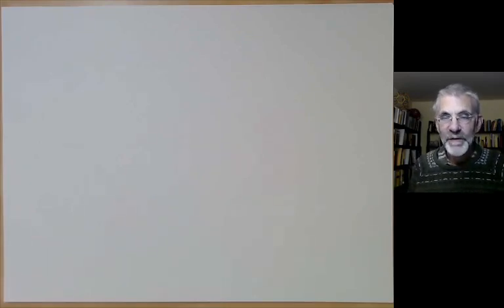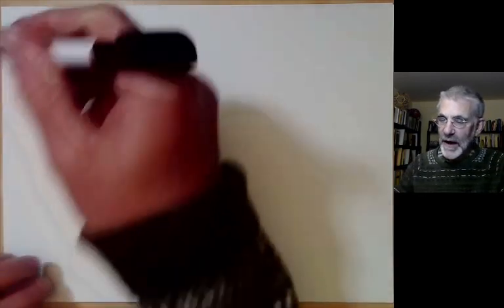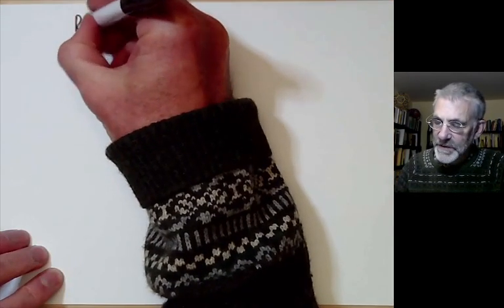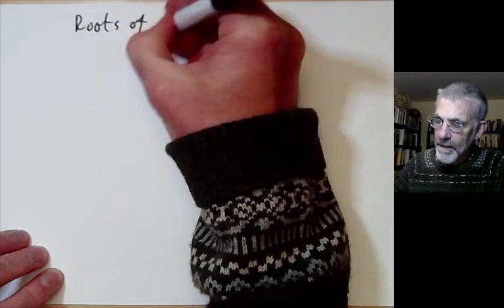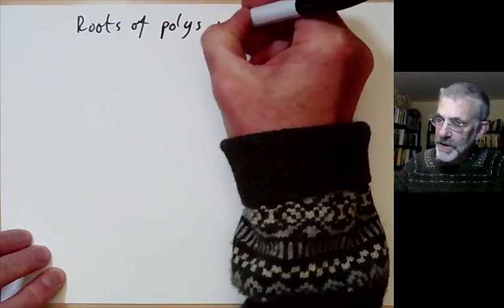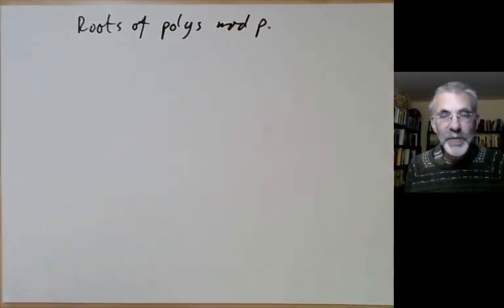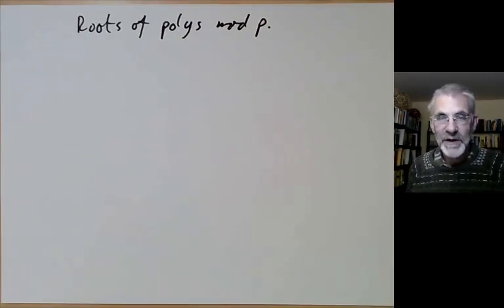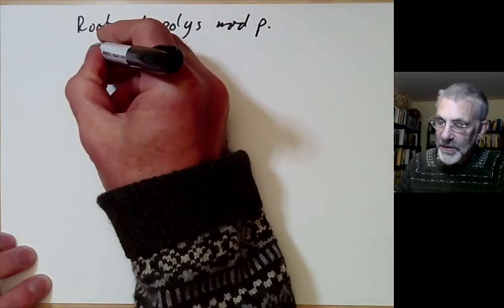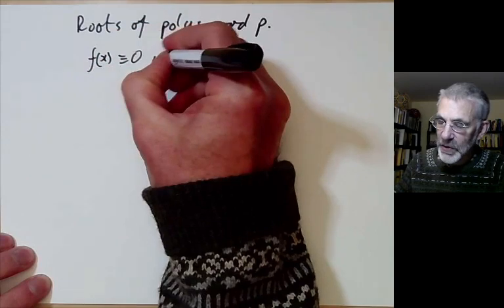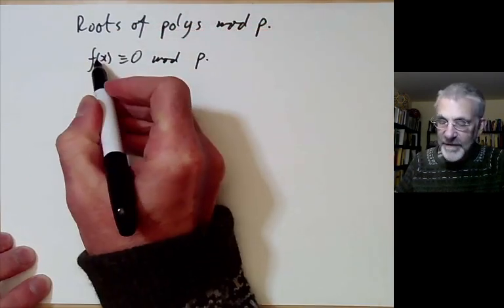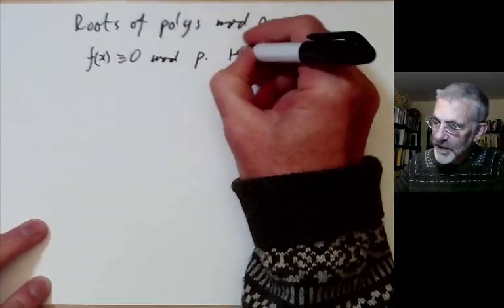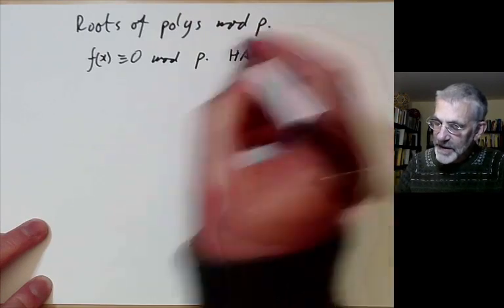This lecture is part of Berkeley Math 115, an introductory undergraduate course on number theory, and will be mostly about finding roots of polynomials modulo some prime number p. In the previous lecture we discussed polynomials of degree two and showed there was a reasonably fast algorithm to do this. In general, if you want to solve f(x) congruent to zero mod p for f an arbitrary function, this can be rather hard if p is large.